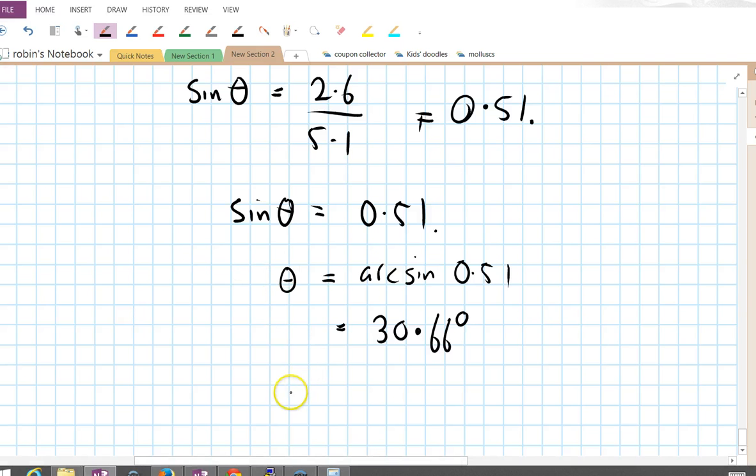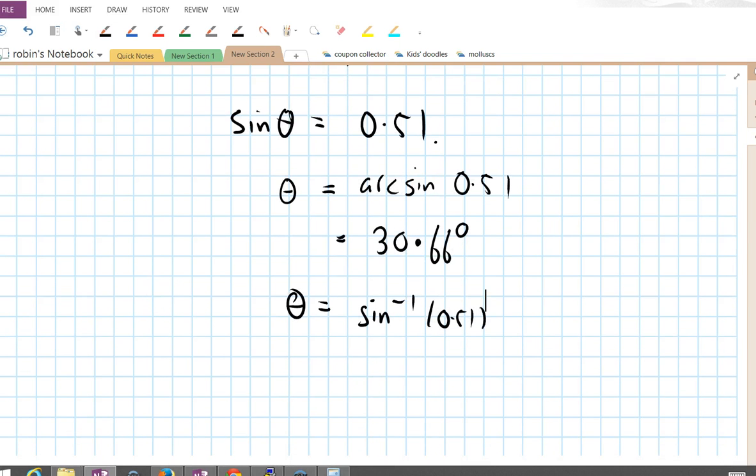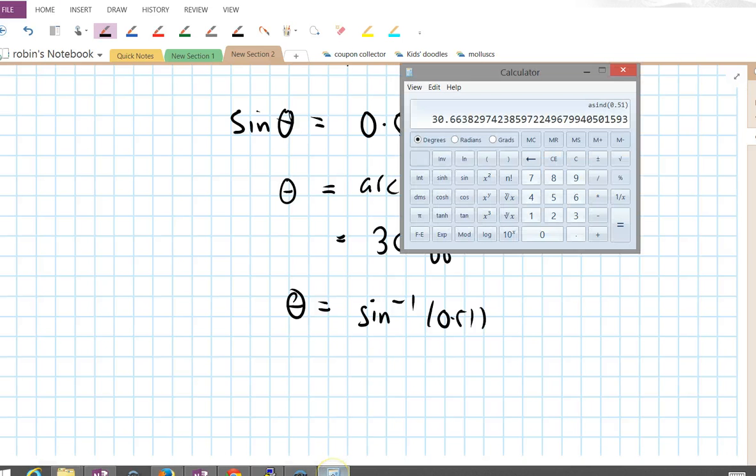Again, sometimes you'll see it written theta equals sine to the minus 1 of 0.51. Sometimes you see that notation, but arcsine's a lot clearer, I think. There you go.